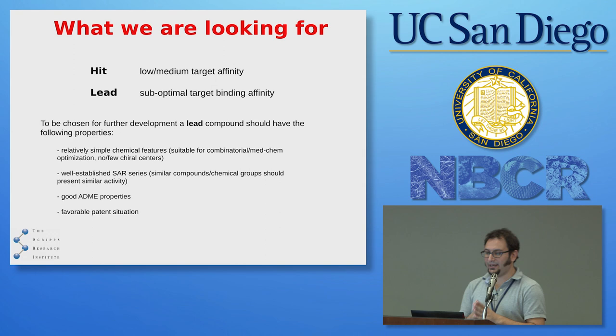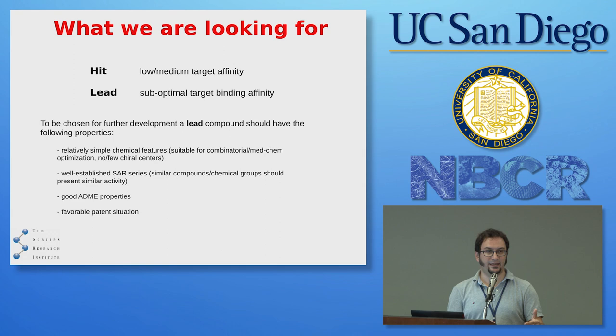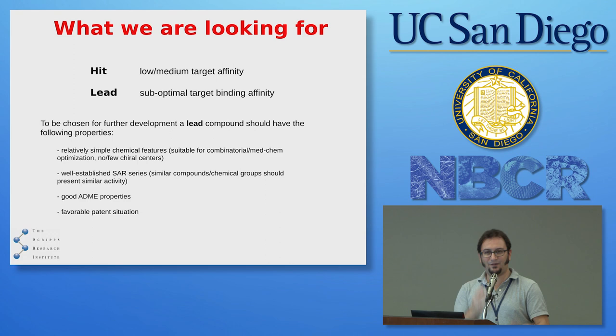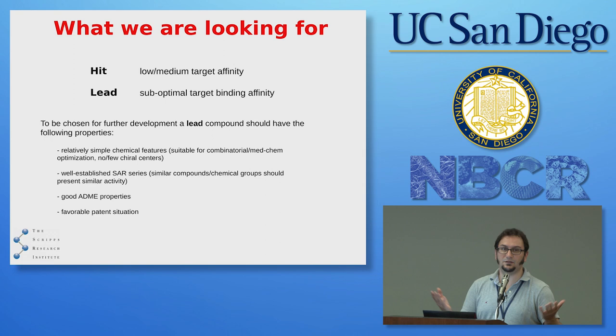You do a virtual screening because you're looking for a hit — a molecule that shows some affinity to your target high enough for you to detect. You're not looking for nanomolar activity out of a screening from scratch. Eventually you take this hit and optimize around the same chemical space to look for a lead. A lead is a molecule very likely to be further developed into a drug candidate. For a lead, there are a few guidelines: it needs to be fairly simple in terms of chemical structure.